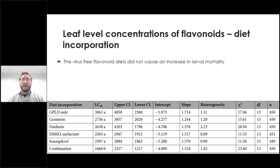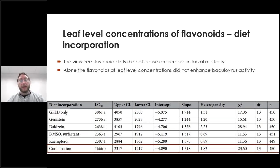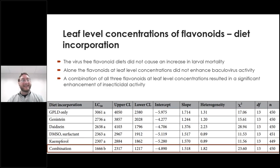When we exposed insects to virus-free flavonoid diets, there was no increase in mortality — the insects were happy to eat, consume, grow, and emerge with no problems. Alone, at leaf-level concentrations, the individual flavonoids — daidzein, genistein, and kaempferol — did not show any enhancement of baculovirus activity. However, when we combined them all together at leaf-level concentrations, we found a significant improvement in the insecticidal activity of the baculovirus against the cabbage looper.